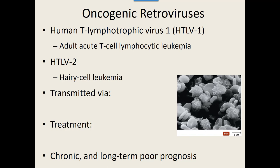These cancerous white blood cells don't stop reproducing and they don't do any good. To the point where you start to get too many white blood cells, and too many of anything is a bad thing — you end up having internal bleeding in the bone marrow and elsewhere in the body.